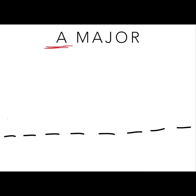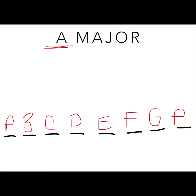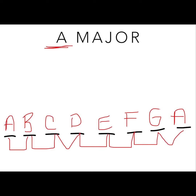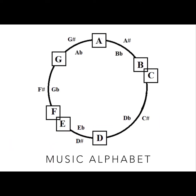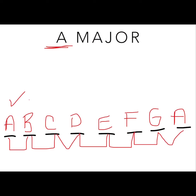Our next scale is A major. Because it's A major, our first and last notes are going to be A. In between, we plug in those letters in order — this helps verify that when we're updating whole steps and half steps, we don't change the letter name; we can add sharps or flats as needed. Now the formula is there: we need a whole step between A and B, and looking at the musical alphabet, A and B are already a whole step, so we check those off as accurate.